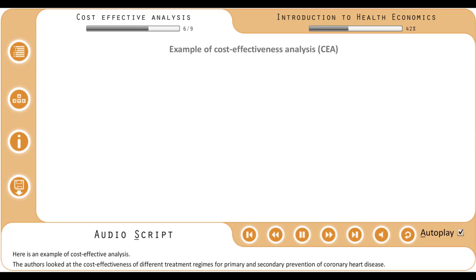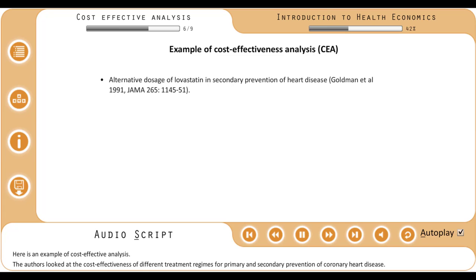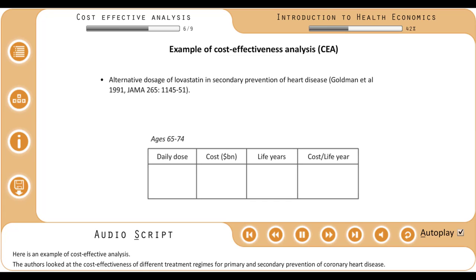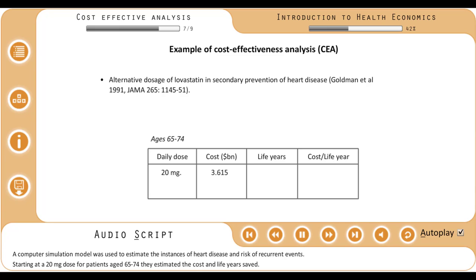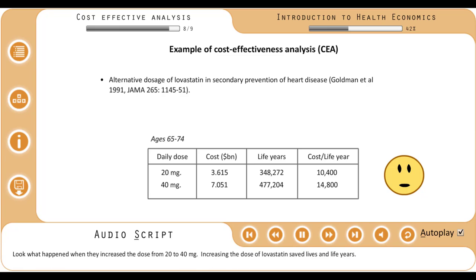Here is an example of cost-effectiveness analysis. The authors looked at the cost-effectiveness of different treatment regimes for primary and secondary prevention of coronary heart disease. A computer simulation model was used to estimate the instances of heart disease and risk of recurrent events. Starting at a 20 milligram dose for patients aged 65 to 74, they estimated the cost and life years saved. Look what happened when they increased the dose from 20 to 40 milligrams.